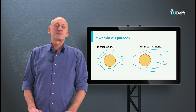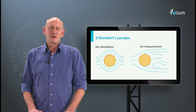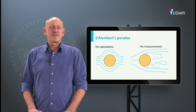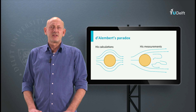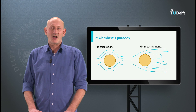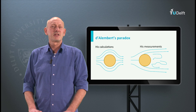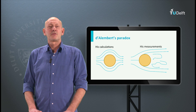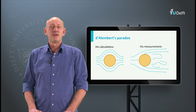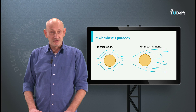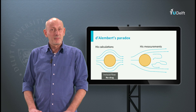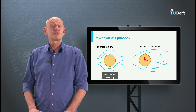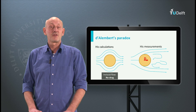Let us start with D'Alembert's paradox. Jean-Laurent D'Alembert was a French mathematician. In 1768, some 80 years after Isaac Newton presented an entire book on fluid dynamics, he applied the equations of motion on an incompressible frictionless flow past a two-dimensional body and found the drag to be zero. D'Alembert also performed measurements and found that there was drag, and that it was proportional to the square of the velocity.